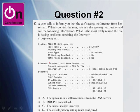Question two. This includes a screen capture. Chances are you would see an actual picture of a Windows command prompt. A user calls to inform you that she can't access the internet from her system. When you visit the user, you run ipconfig /all and see the following information. What's the most likely reason the user is having problems? The purpose of this item is to test whether you can interpret ipconfig /all output.